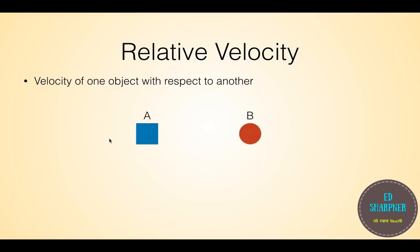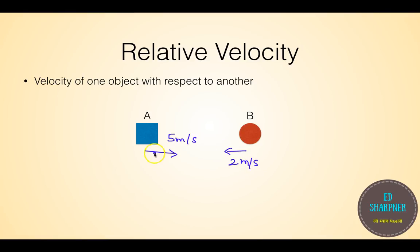Now we are asked: what is the velocity of A with respect to B? If body A is moving in one direction at 5 meters per second and body B is moving in the opposite direction at 2 meters per second, body B would see A approaching even quicker. So the relative velocity of A with respect to B would be 5 plus 2, which is 7 meters per second.